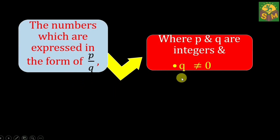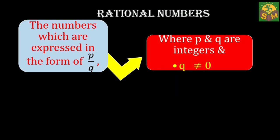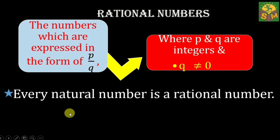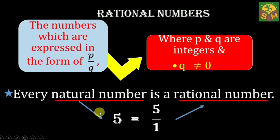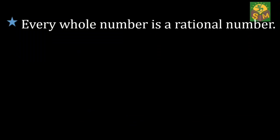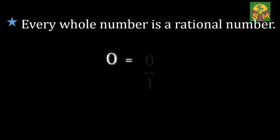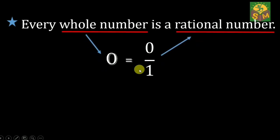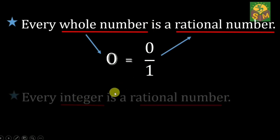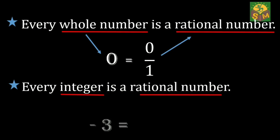We can express any natural number — for example, five — as five over one, which is clearly a rational number. Similarly, we can express any whole number — for example, zero — as zero over one, which is the quotient of two integers with a non-zero denominator. We can also express any integer — for example, negative three — as negative three over one, which is a rational number.